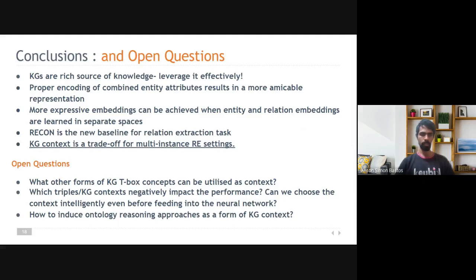Open questions are, what are the forms of KG T-box concepts could be used in addition to the four attribute information we have used? Which triples affect the performance? And can we intelligently select context information before feeding it to the network? And also, how do we induce ontology reasoning approaches as a form of KG context?